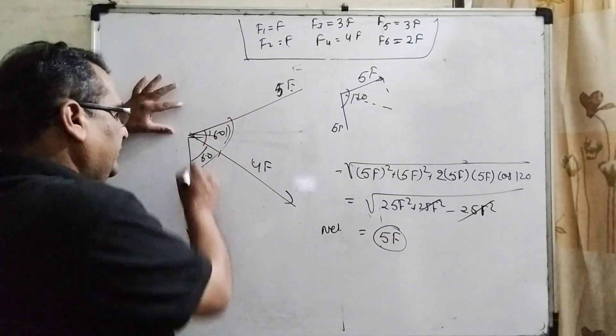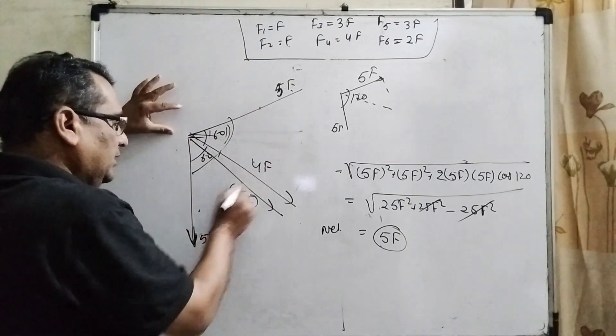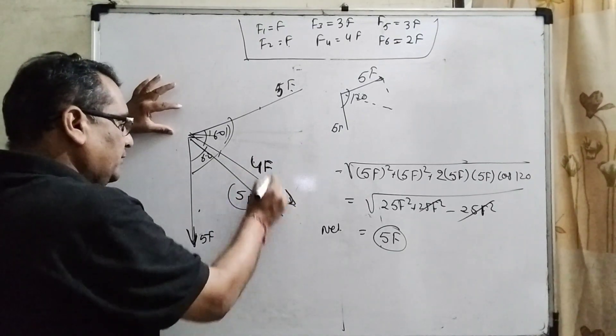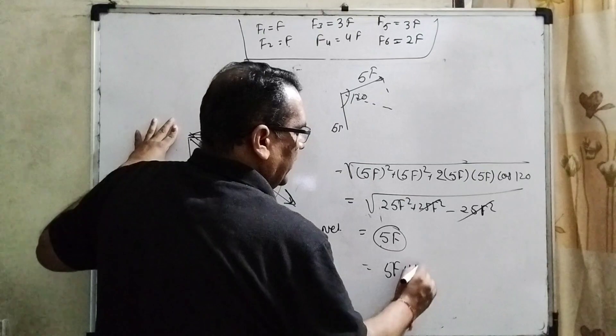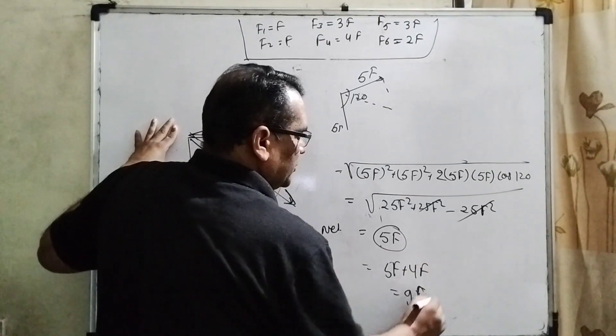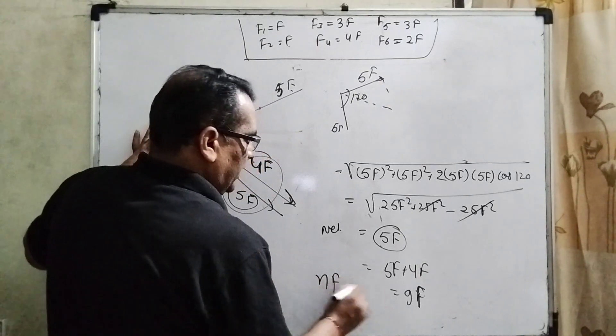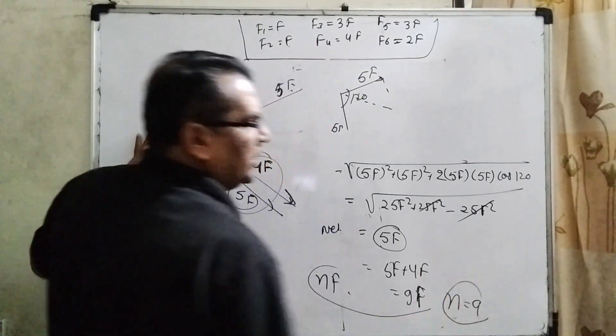And this 4F is overlap each other. 5F. It is resultant of this and this one. And 4F. We have to find out. This is force. So, total force become 5F and 4F become 9F. And so, therefore, nF compared with nF, your n is 9. So, correct answer is 9.